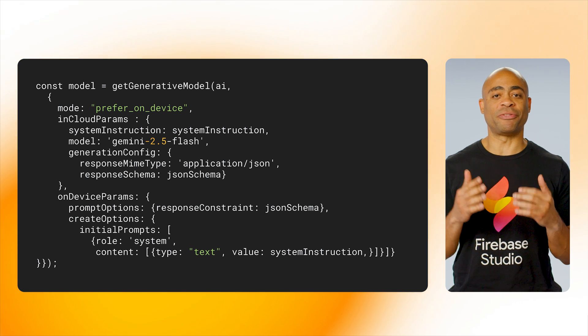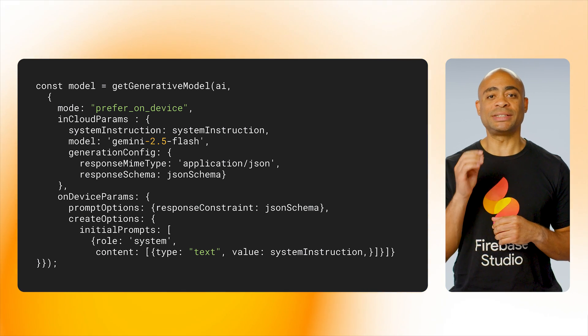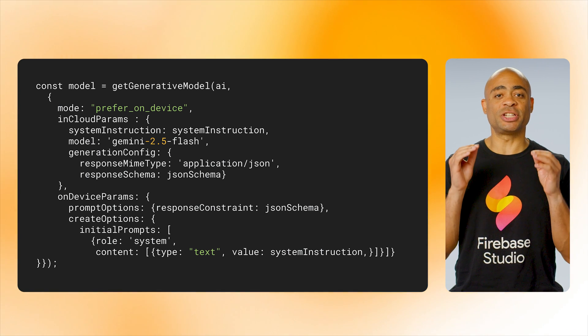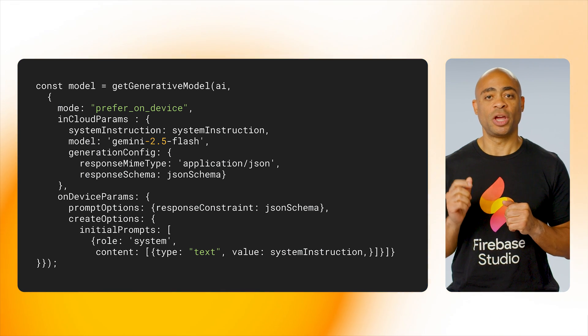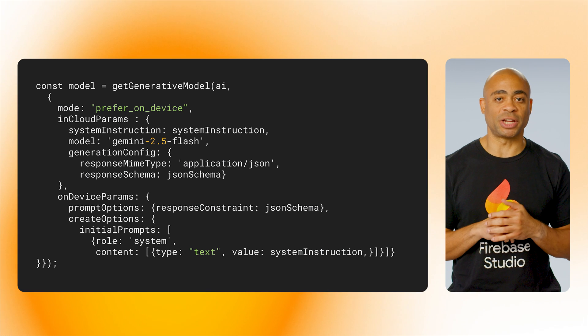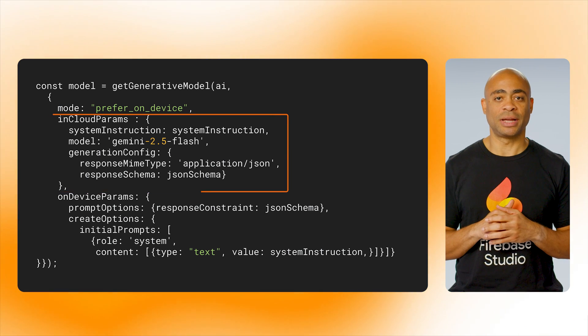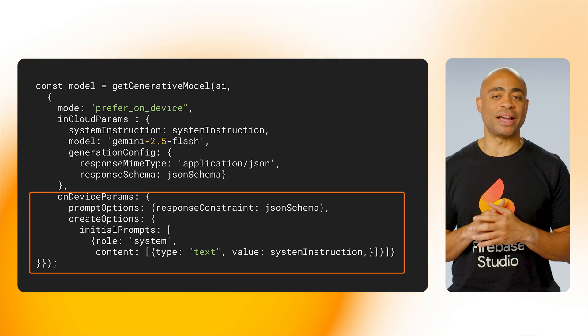Now that you have your model preference set up, you'll want to set some parameters for inference. In the configuration settings for Get Generative Model, you can configure two more objects: one for a cloud-hosted model and one for an on-device model. A lot of these inputs overlap in this case, but there may be instances where you want the cloud model to handle data differently since it's much larger than the on-device model.